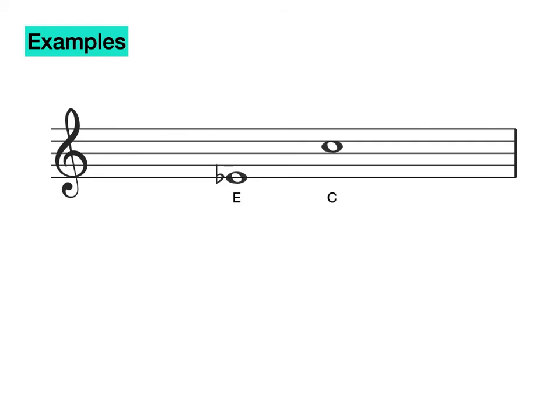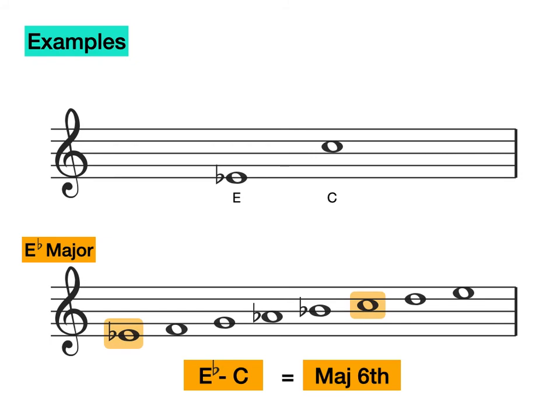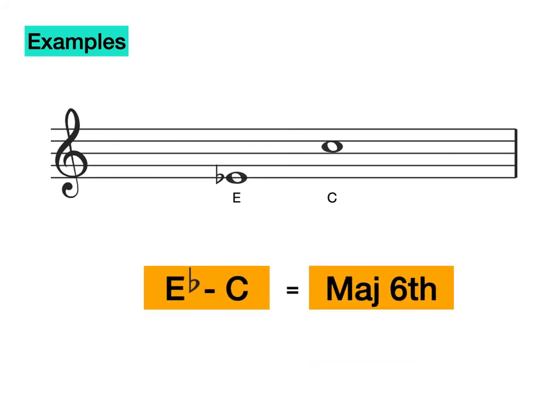Let's try some examples. What two notes do you have here? That's right, you have an E flat and a C natural. So is C natural in E flat major? Let's write out the scale and see. C natural absolutely is in E flat major, making this a major sixth.